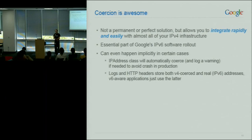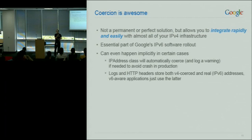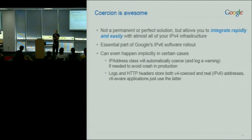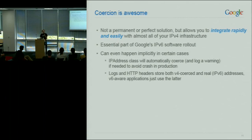Most of our software now understands IPv6 addresses. But you need to be careful — at some point these leak to users. So Gmail would say 'your last login address was 239.55.whatever.' That's obviously not good. We even do it automatically in production: if you try to convert an IPv6 address to an IPv4 address instead of crashing, we convert it and log a warning. I don't think this has happened yet in production, but it's good to be safe.